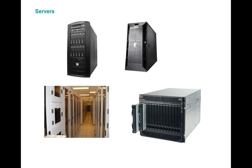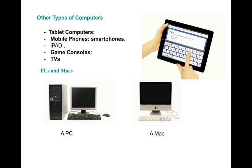Now I will show you other types of computers. We have tablet computers, mobile phones, smartphones, iPads, game consoles, and smart TVs. A game console is a device where kids and young people can play games. Smartphones are also counted as a type of computer because with a smartphone you can type, write, and send documents.